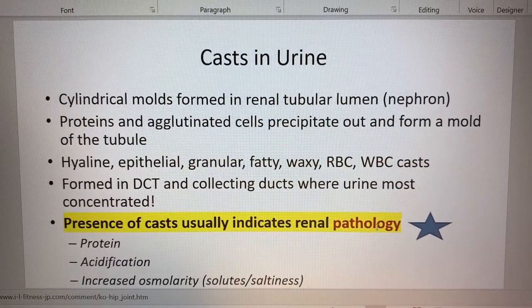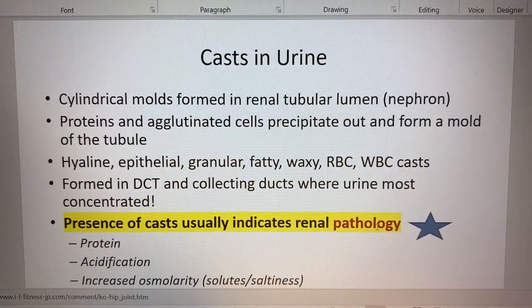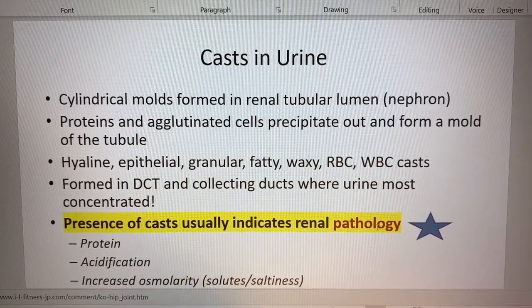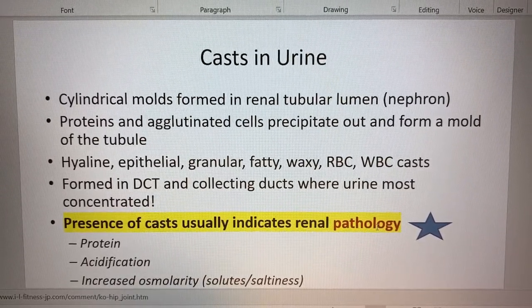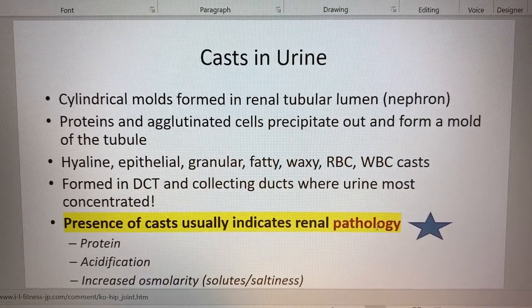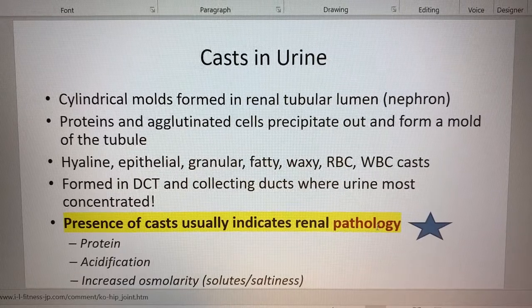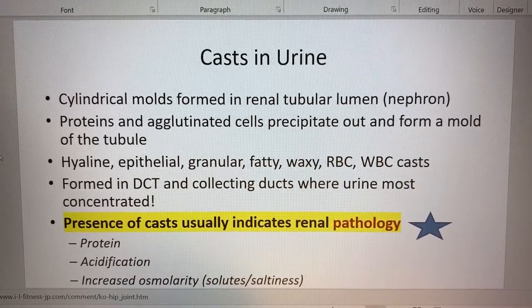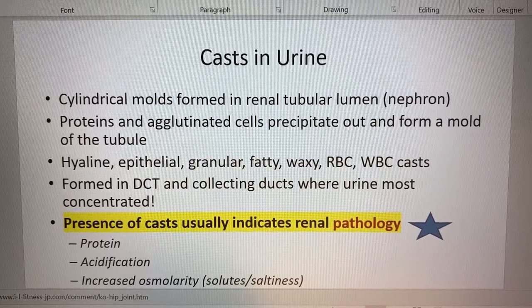Let's look at the first one, which is a cast. A cast is like a mold or a copy of the interior of wherever the thing comes from or forms. Remember that a nephron is a series of connected tubes, so a cast is going to look much like the tube in which it formed.